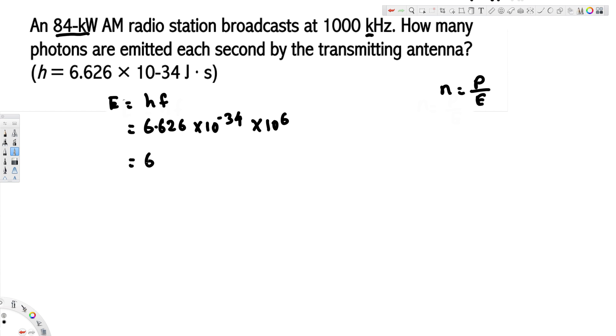If you add 6 with this minus 34, that's going to give you 6.626 times 10 to the power of minus 28 joules. And this is going to be the energy.